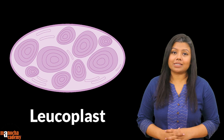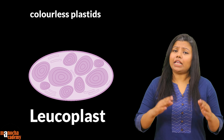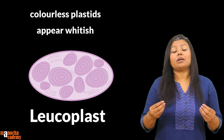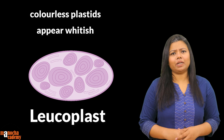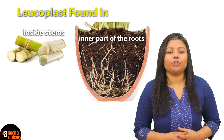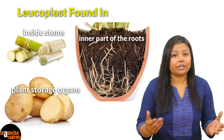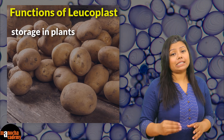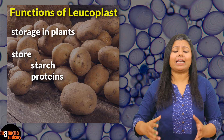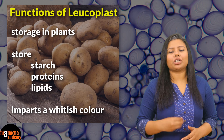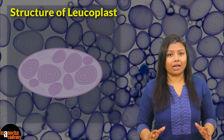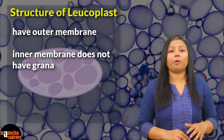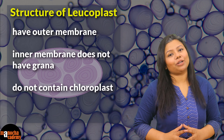Leukoplasts are the colorless plastids that are present in those parts of the plant body where we see no color, or parts which are white or appear white in color — for example, inside the stem, in the inner part of the root, or in storage organs like potatoes. Leukoplasts are responsible for storage in plants and since they store starch, proteins and lipids, starch imparts a whitish color to leukoplasts. Structurally, leukoplasts have an outer membrane but the inner membrane lacks any organization forming grana, or they do not contain chlorophyll in them.